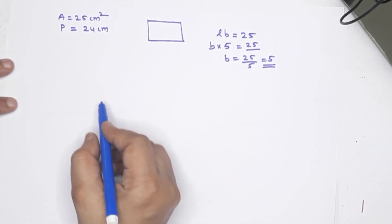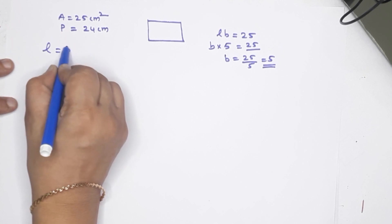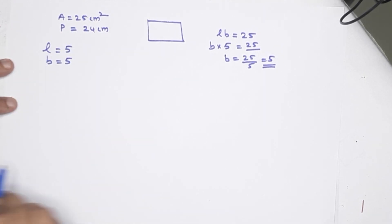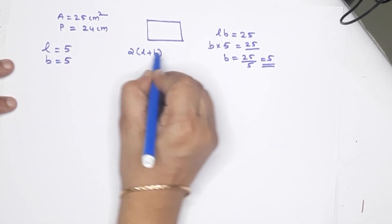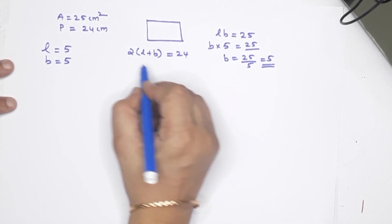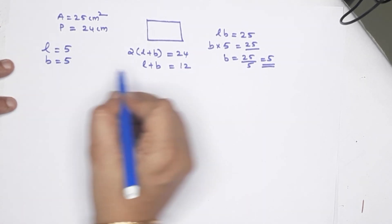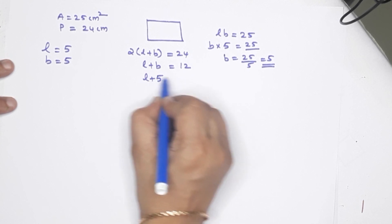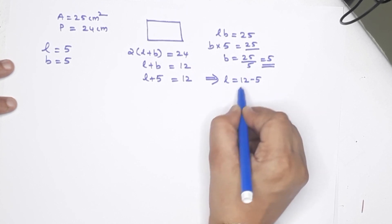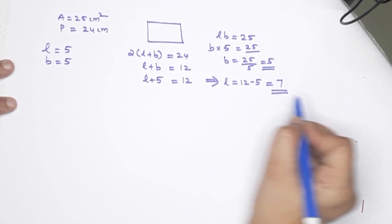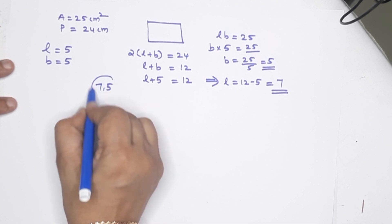Let's take a look at this question. Area is 5 × 5, length equal to 5, breadth equal to 5, that is 25 cm² area. The perimeter is 2 into (L + B), equal to 24. That is L + B equal to 12. So L + 5 equal to 12. Therefore L equal to 7. Both sides: L is 7 and B is 5.